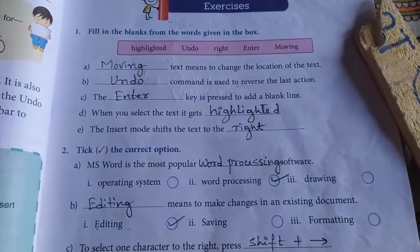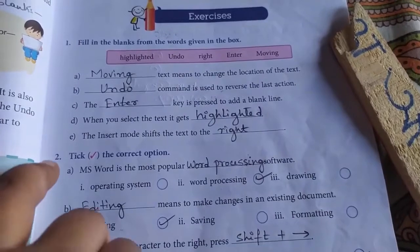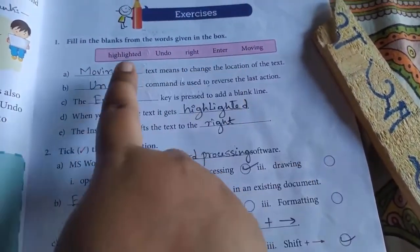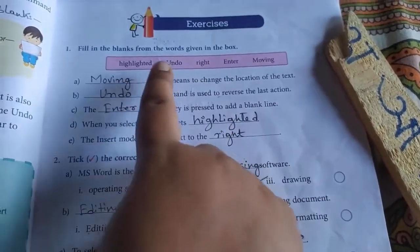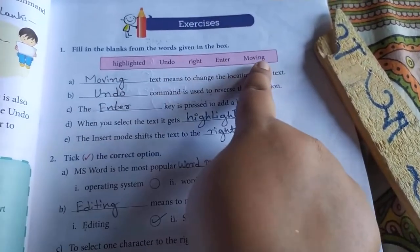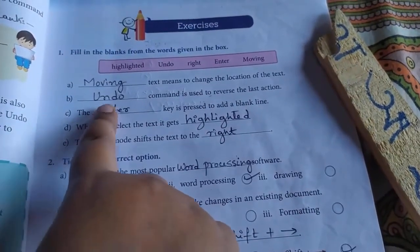This is the first exercise of chapter 3. Fill in the blanks from the words given in the box. Five words are given in the box: highlighted, undo, write, enter, moving. Let us do the fill in the blanks.